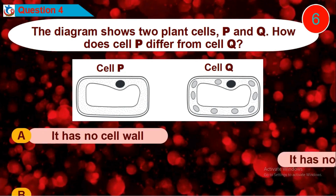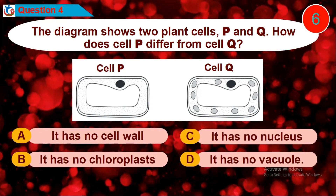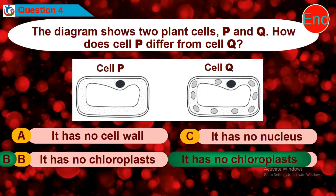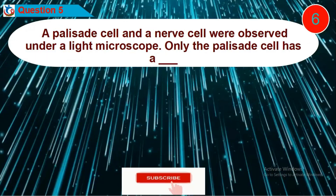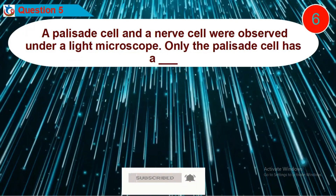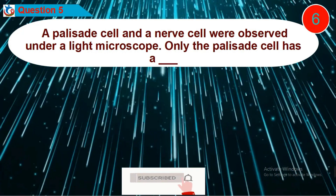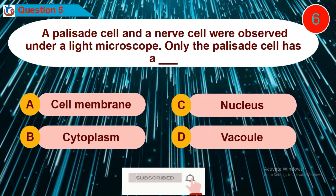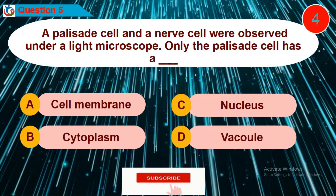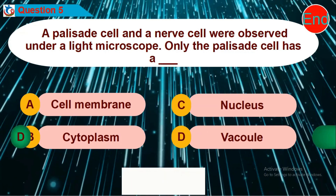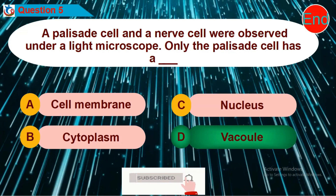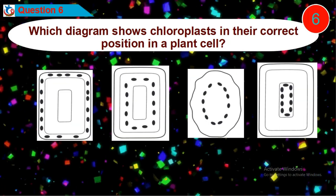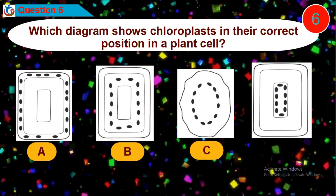Question 5: The palisade cell and the nerve cell observed under a light microscope — only the palisade cell has a dash. Is it option A, B, C, or D? Question 6: Which diagram shows chloroplasts in the correct position in a plant cell? Is it option A, B, C, or D?